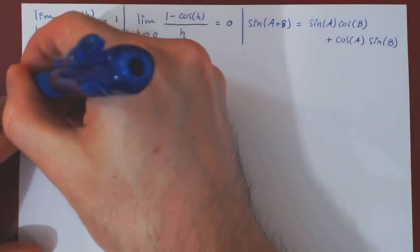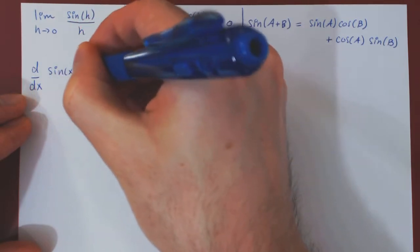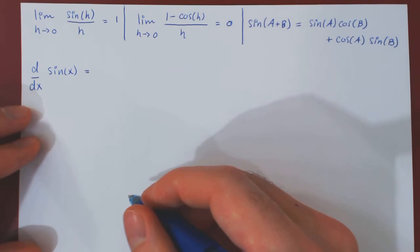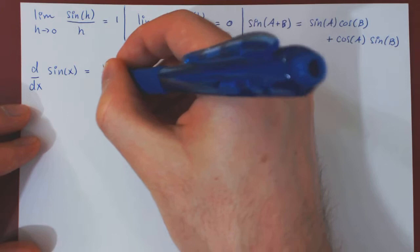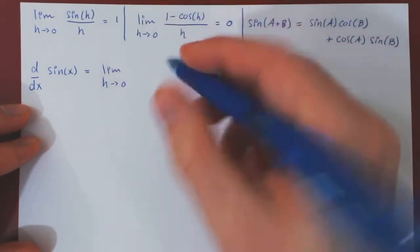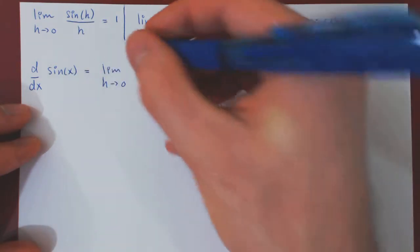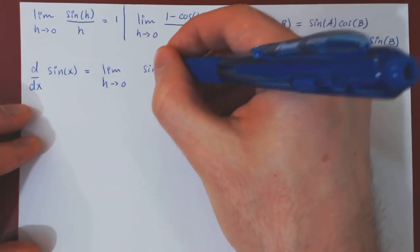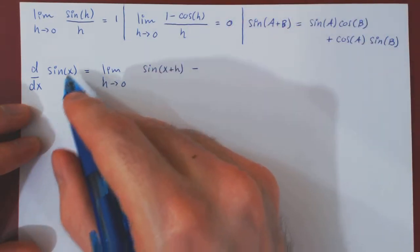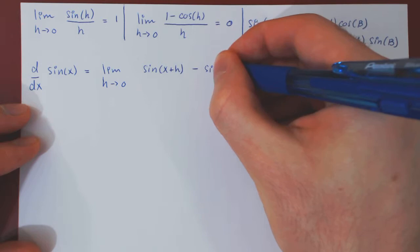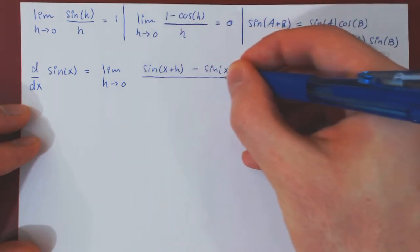So, the derivative of sin of x, well, from the definition, will be the limit as h approaches 0. Well, f of x plus h, well, f of x is sin of x, so we will have sin of x plus h minus f of x, which is sin of x, over, of course, h.